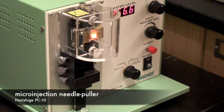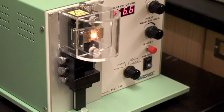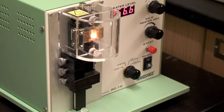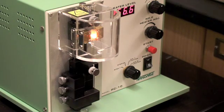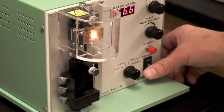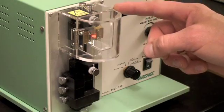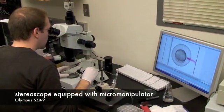Upon completion of our fluorescent transgene, we pull 10 to 15 micrometer outer diameter injection needles and isolate one to two cell stage zebrafish embryos from specially designed breeding chambers. Now comes the tricky part.